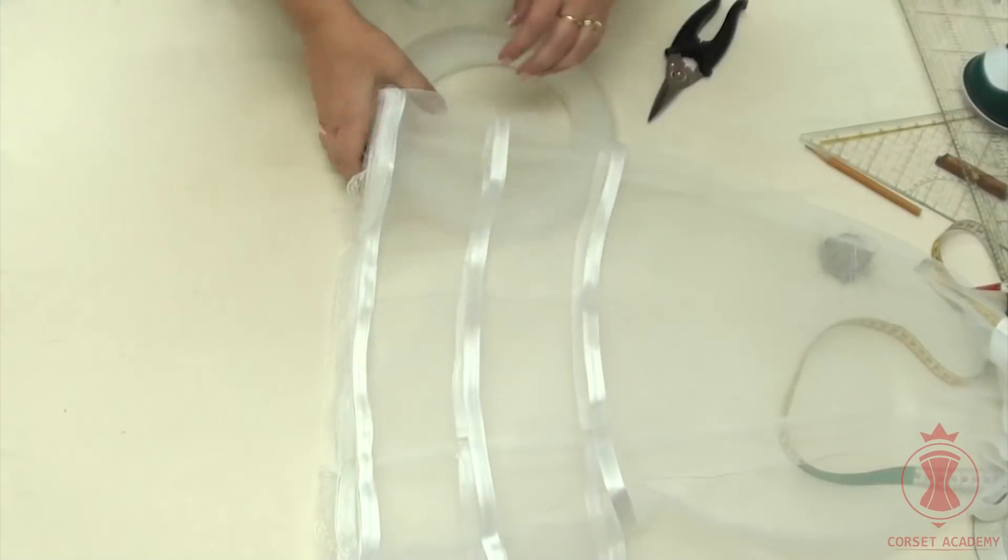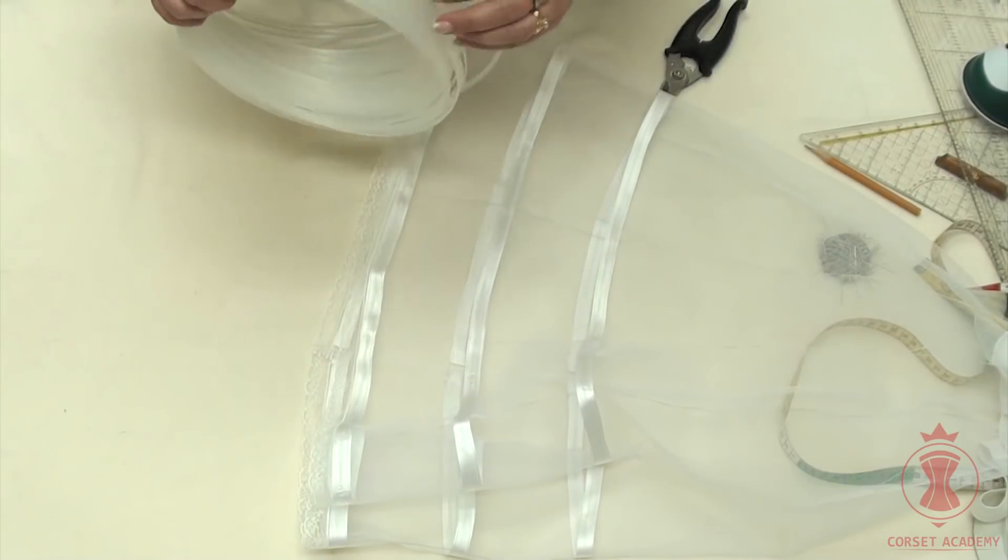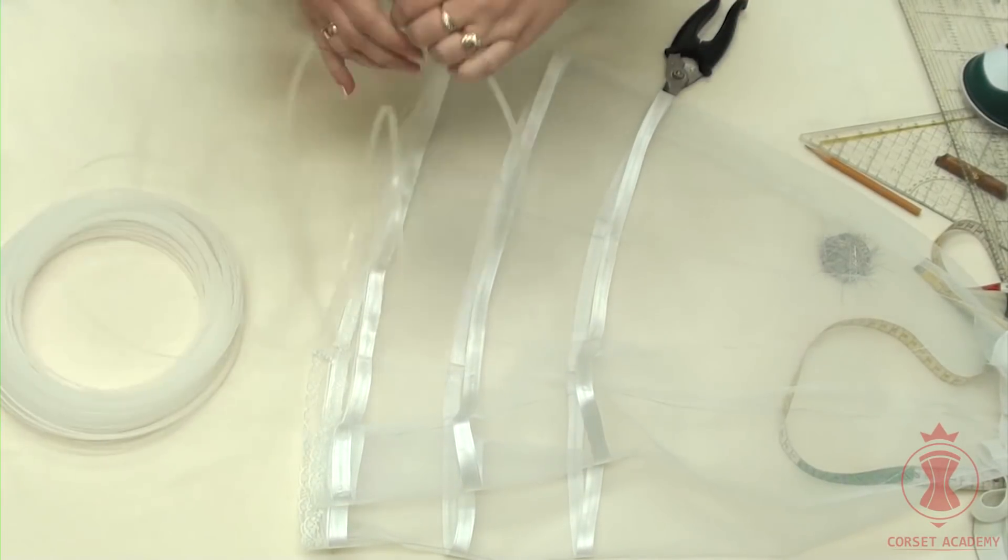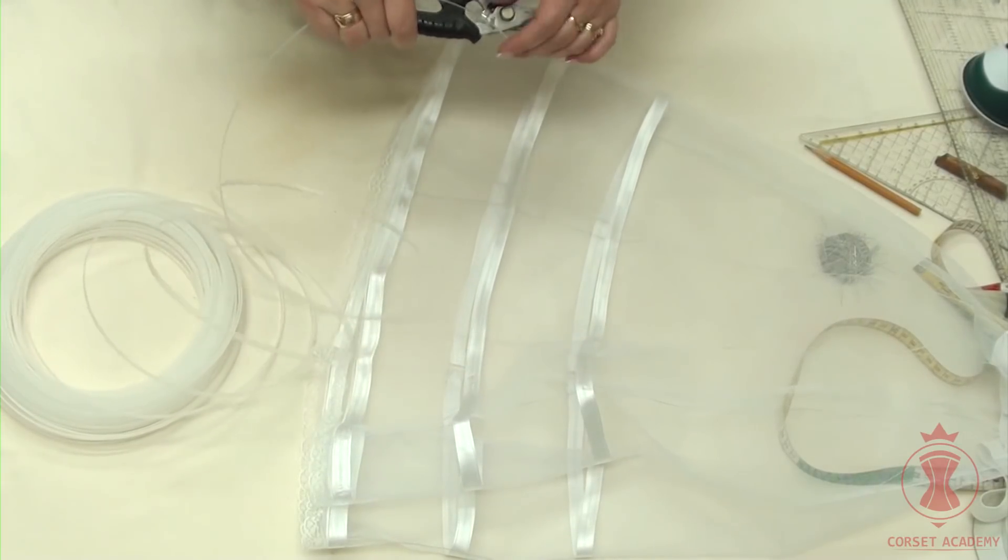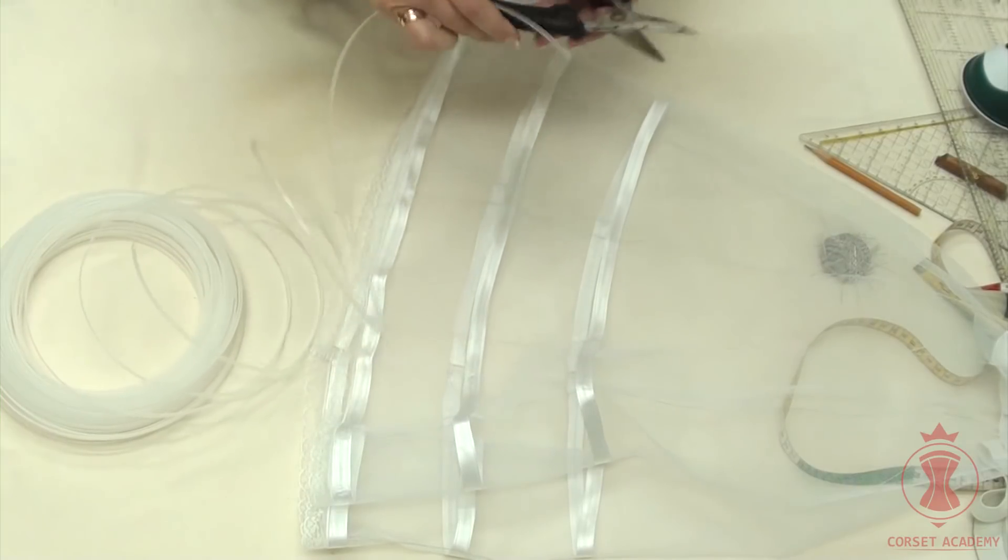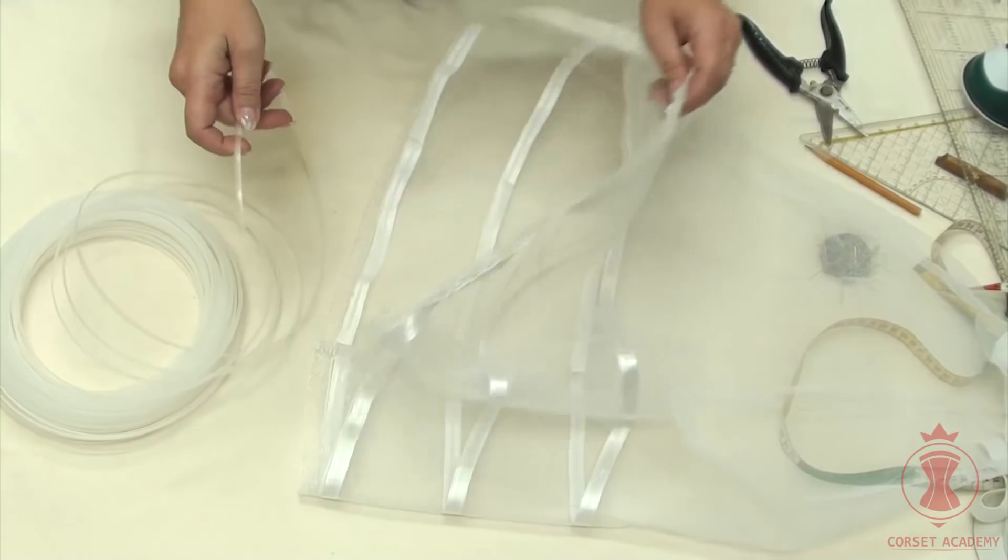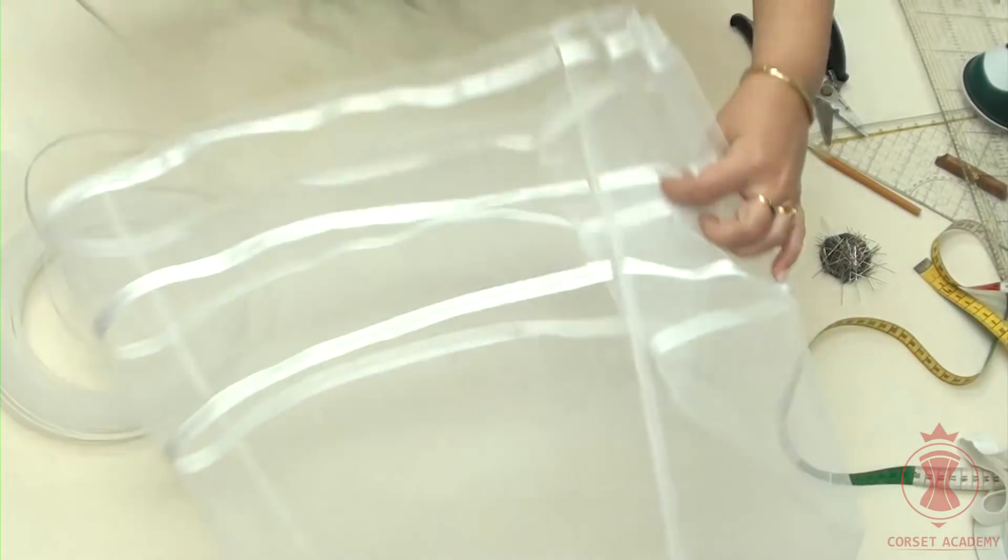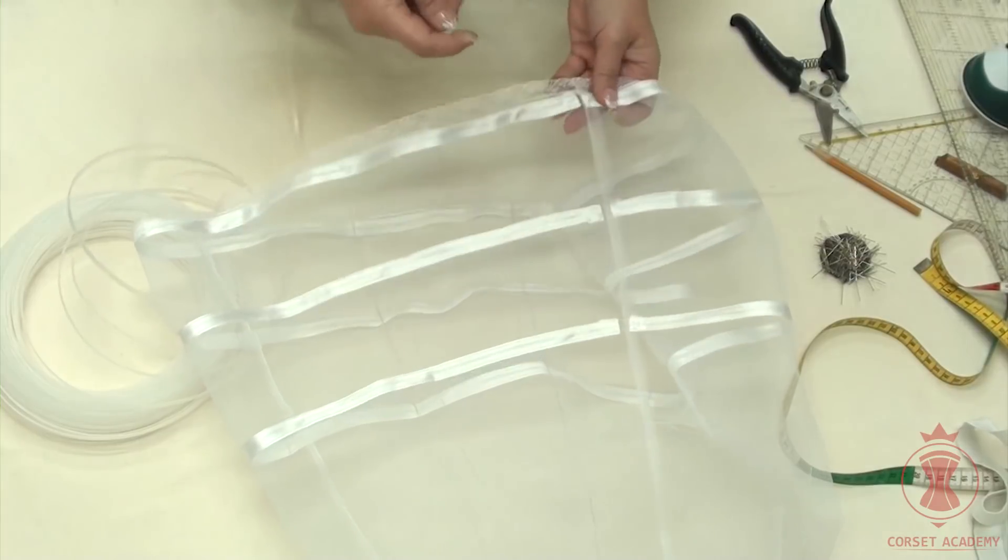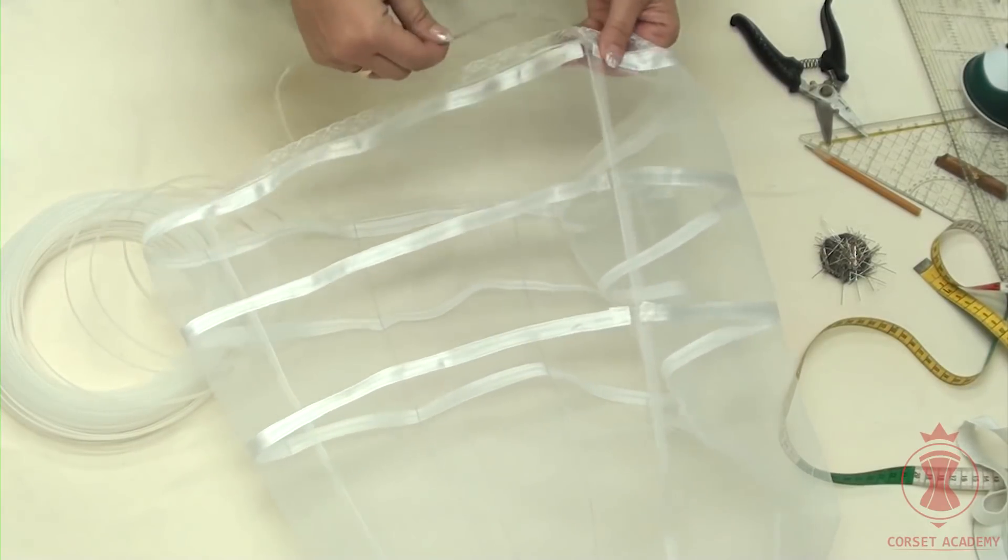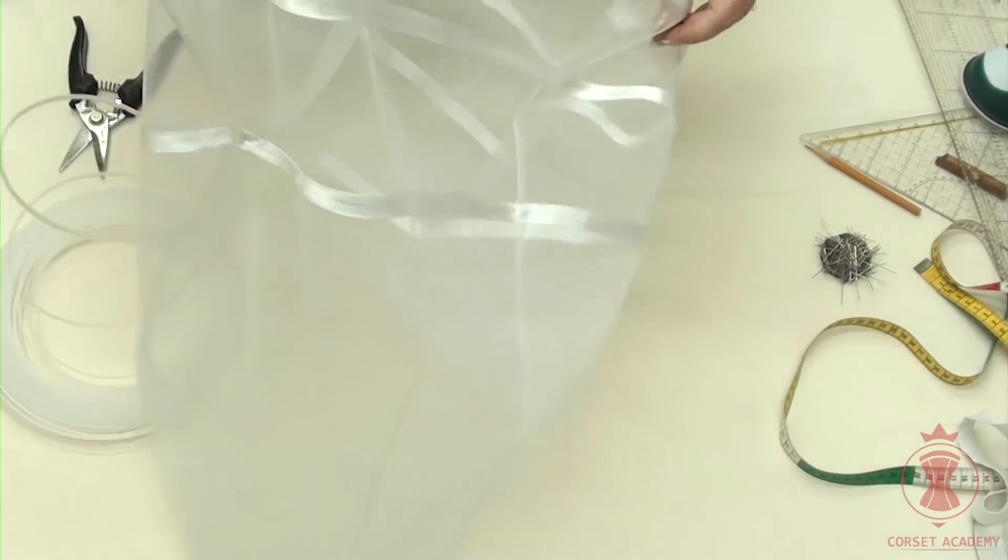Now I need to insert hoops in the tunnels. Of course, you'd need steel hoops for the actual petticoat, but plain plastic bones will do for the mock-up. Such plastic bones can only be used in mock-up petticoats or in dresses for little girls. I insert a plastic bone in the bottom tunnel.